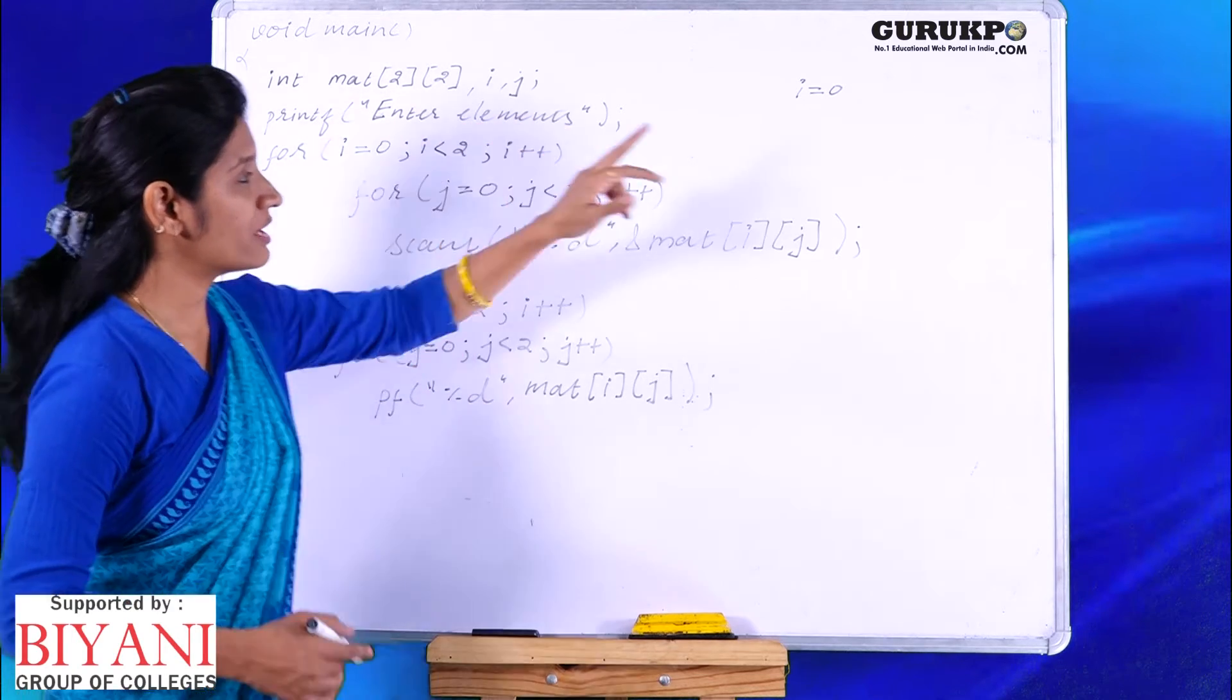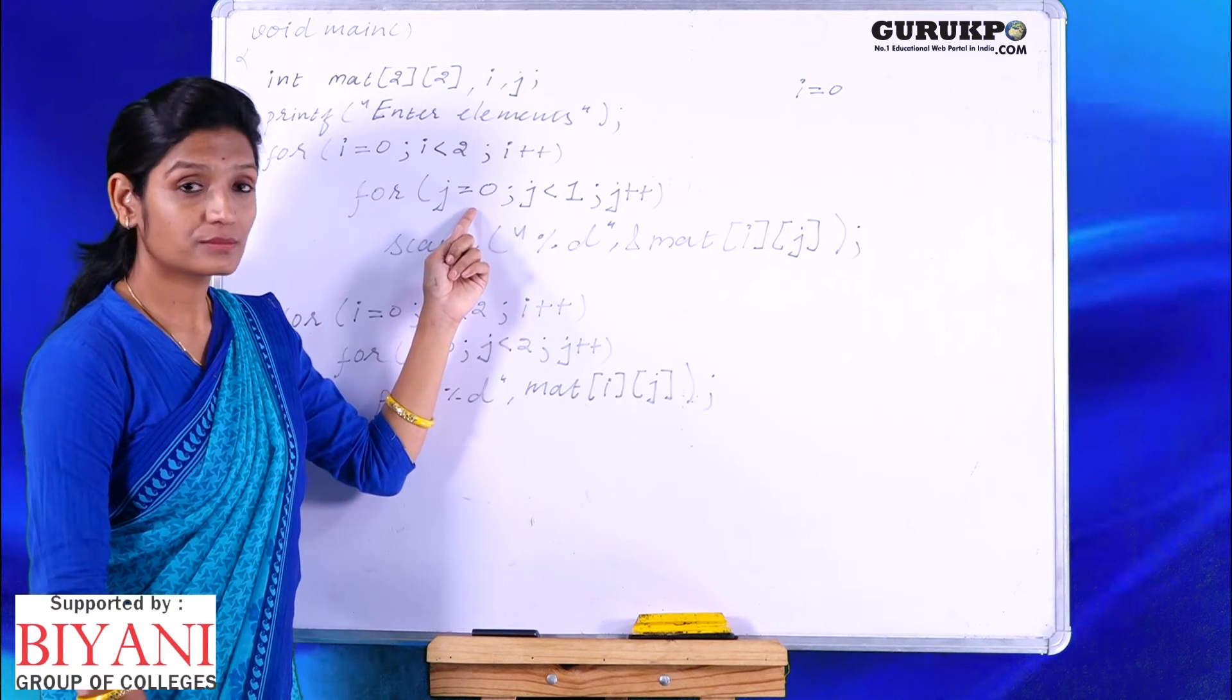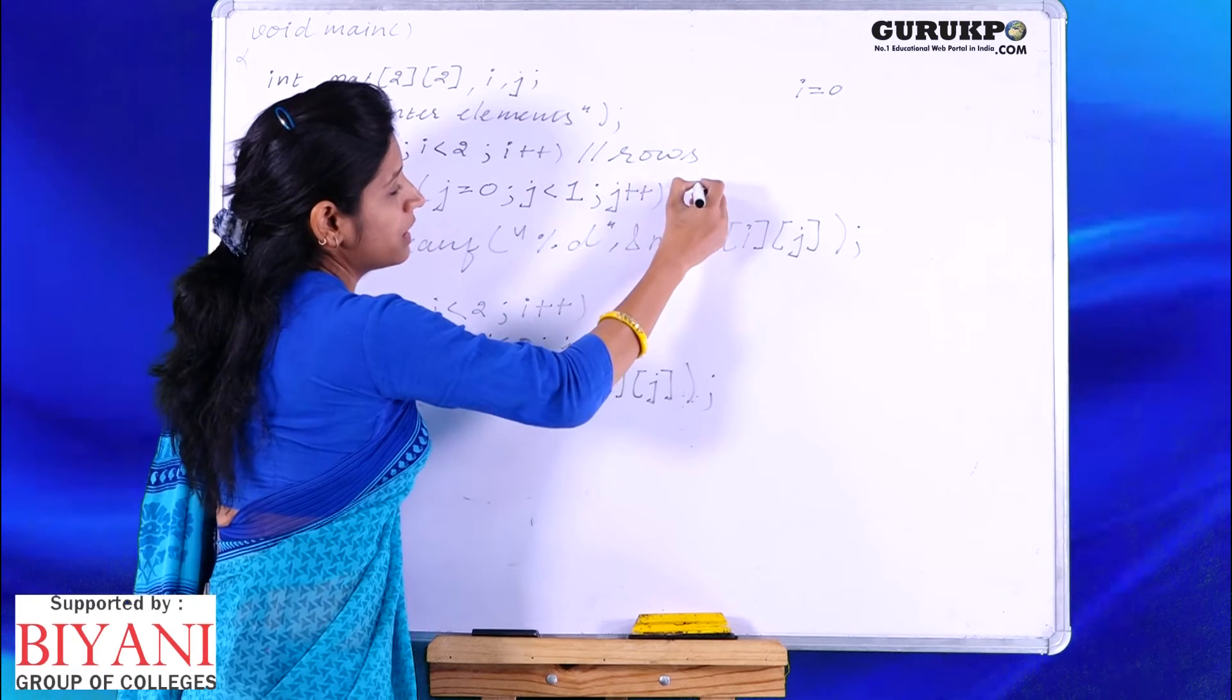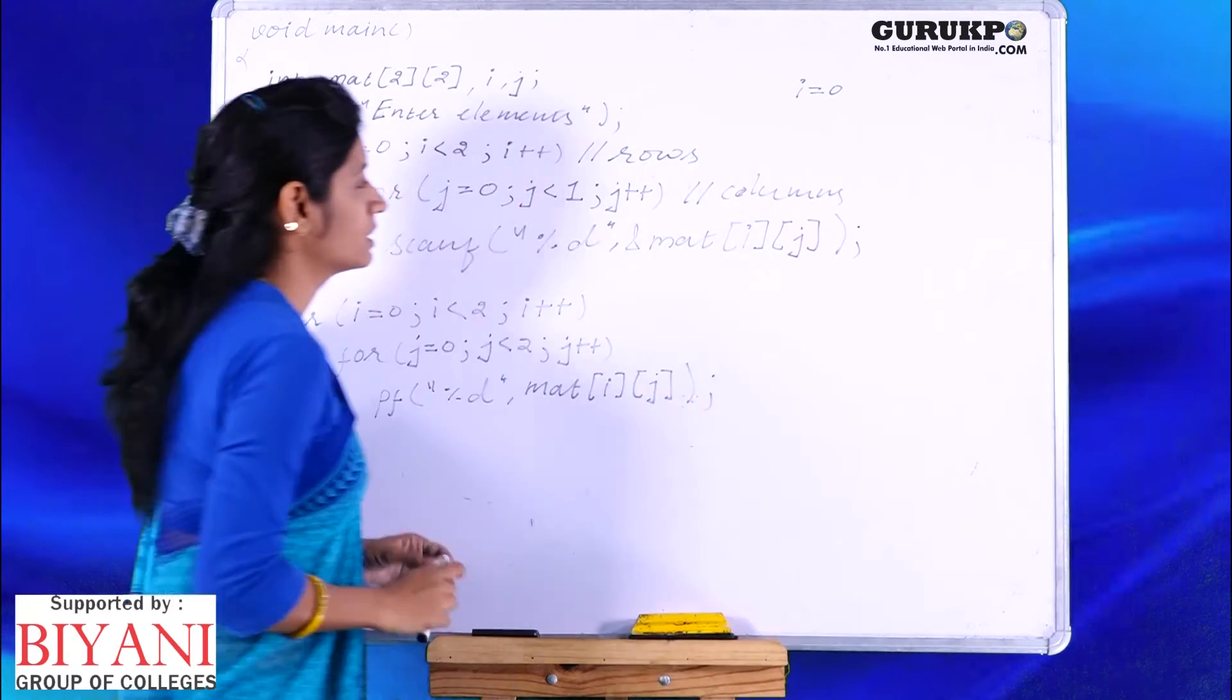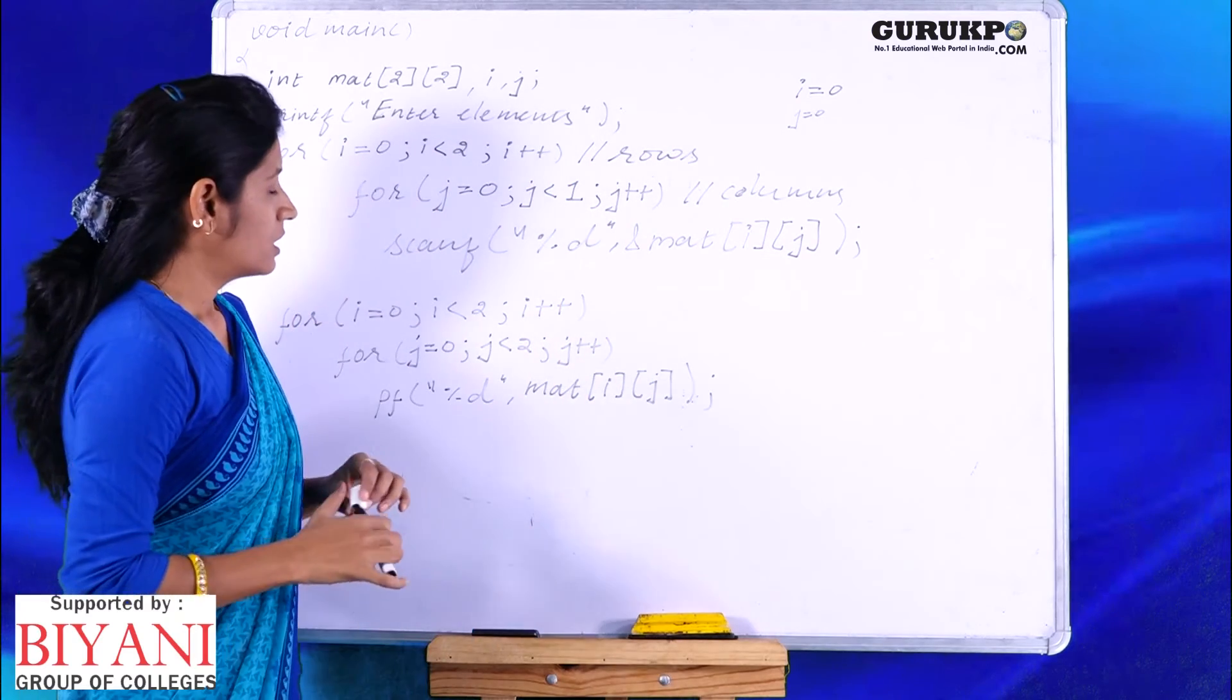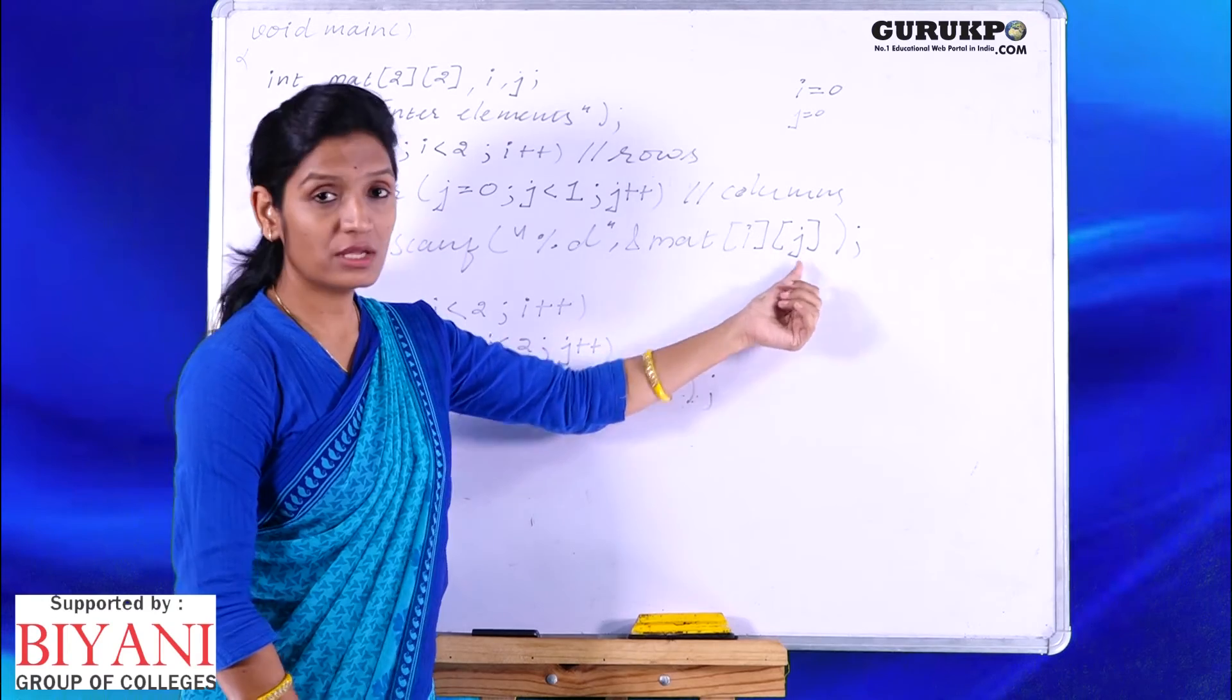The value of i we have initialized with 0. i is less than 2, yes it is true, we will come inside the loop. Again there is a loop for column. This loop will take count of rows and this loop will take count of columns. 0th row and 0th column, the value of j has also become 0 from this loop. The value entered by user, suppose it is 1, the 1 will go to mat of i j, i is 0, j is 0.